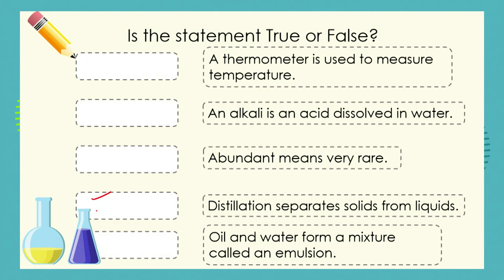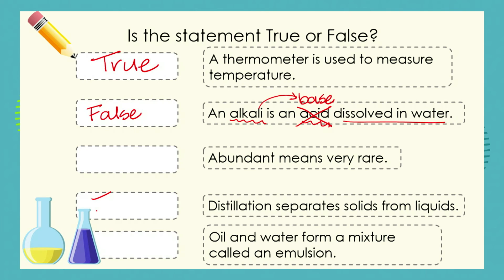I can't hear you — you need to be shouting out your answers. 'A thermometer is used to measure temperature' — yes, that is true. 'An alkali is an acid dissolved in water' — that sentence has a big problem, because an alkali is in fact a base dissolved in water. So this statement, as many of you were shouting out, is false.